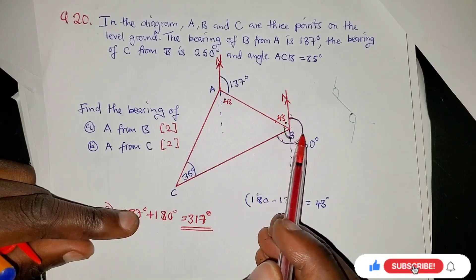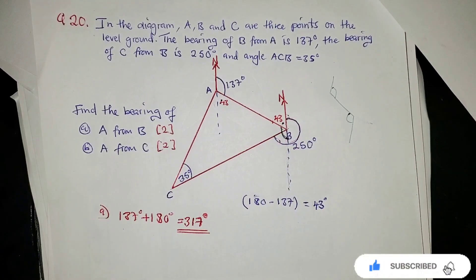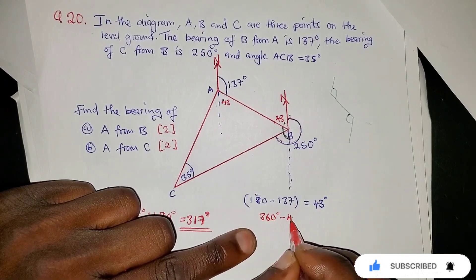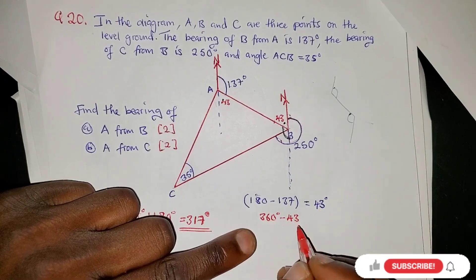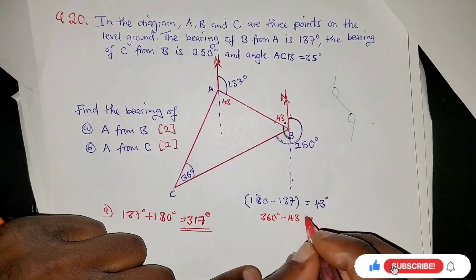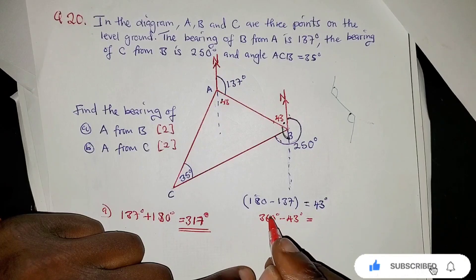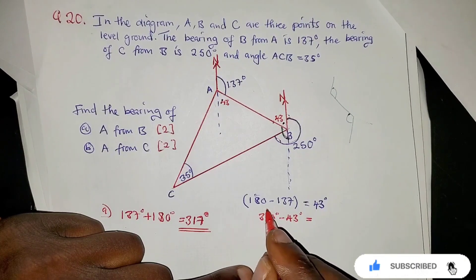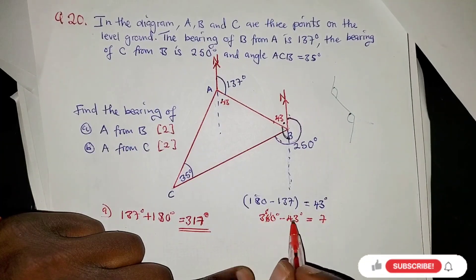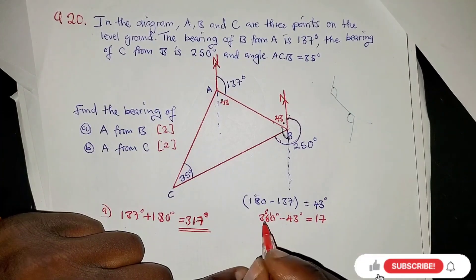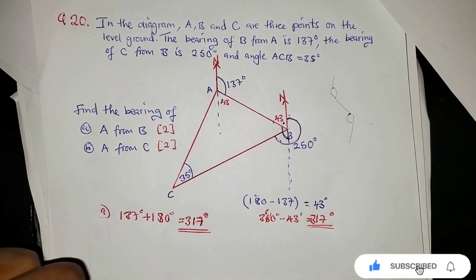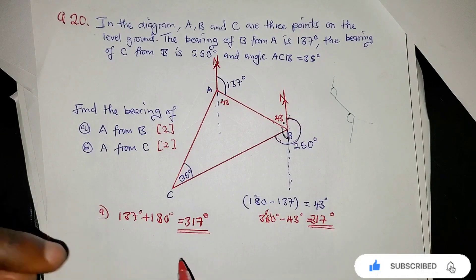Since this angle is 43°, the alternate angle here is also 43°. We then subtract from a complete turn: 360 minus 43. That gives us 317°. So both methods confirm the bearing of A from B is 317°.